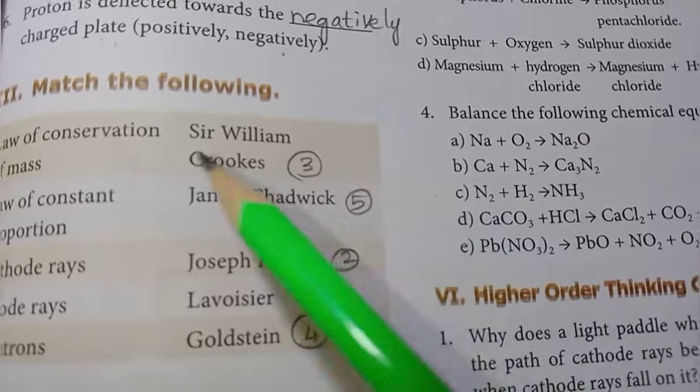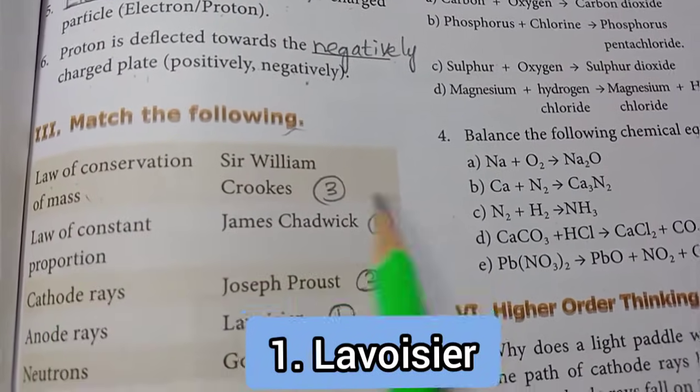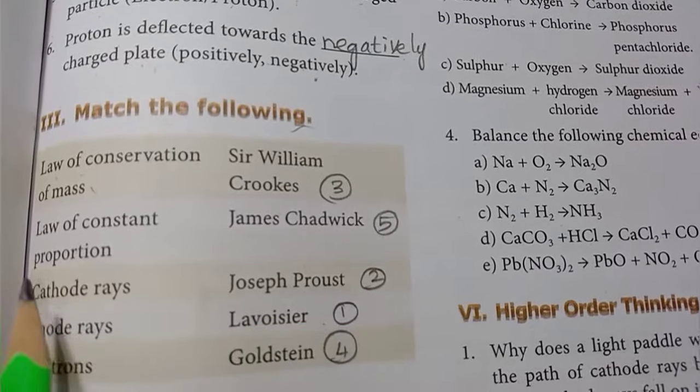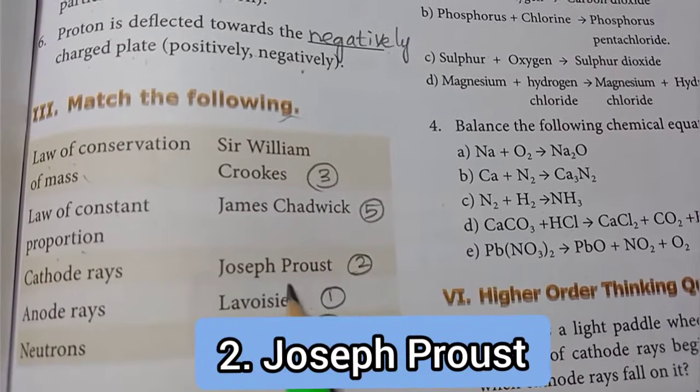Roman numeral 3, match the following. Law of conservation of mass: Lavoisier. Law of constant proportion: Joseph Proust.